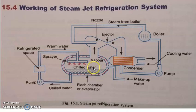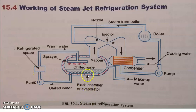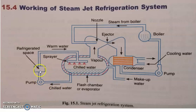Those water molecules which are escaping this chilled water surface will be admitted to the next areas, which will be driven away by some other medium. So, what is happening here is somehow this chilled water is getting produced. And this chilled water, which is already having a very low temperature, will be admitted to a refrigerated space. A refrigerated space means the area which we want to cool down.